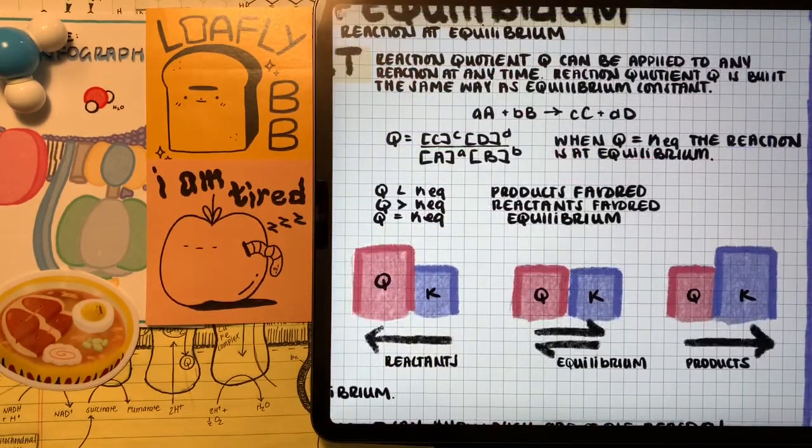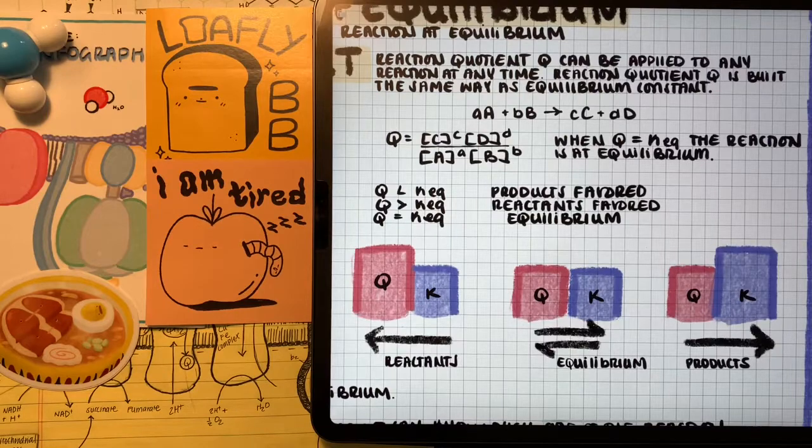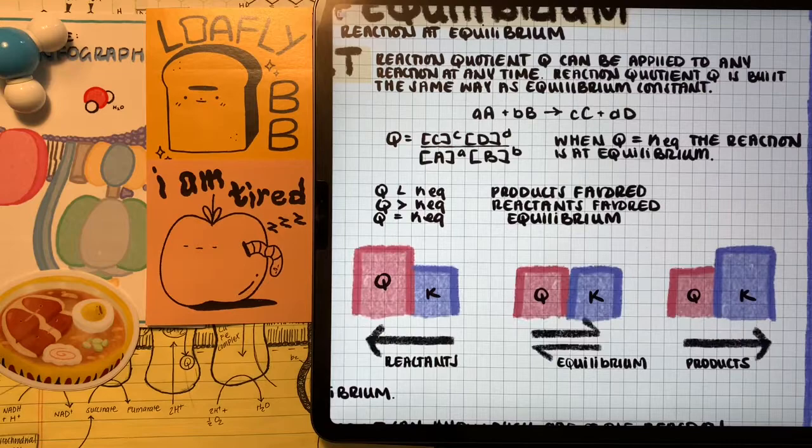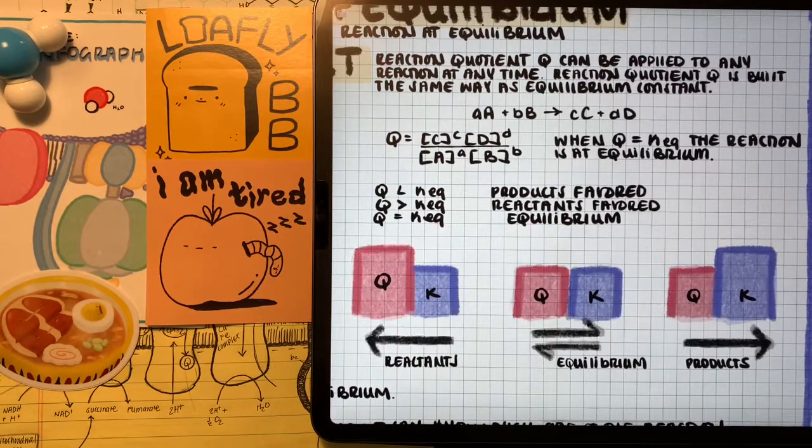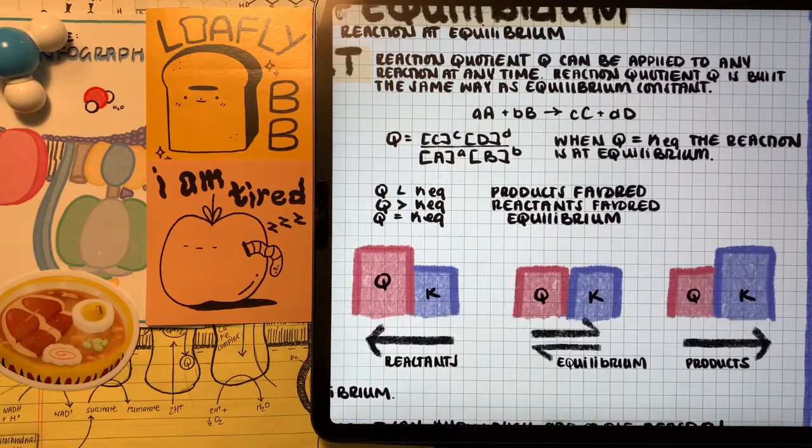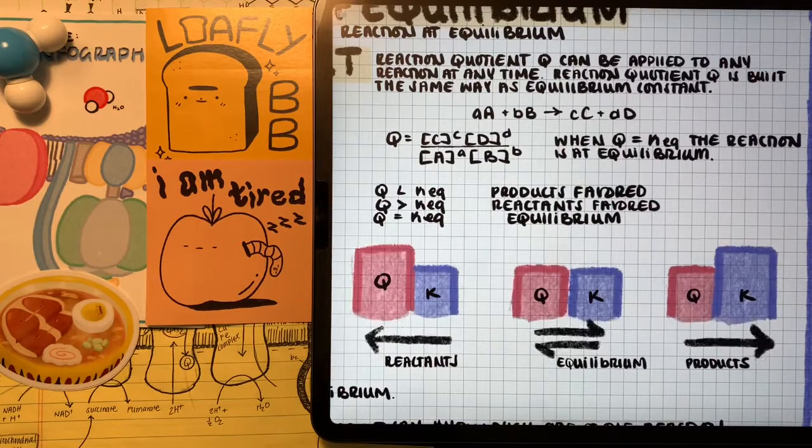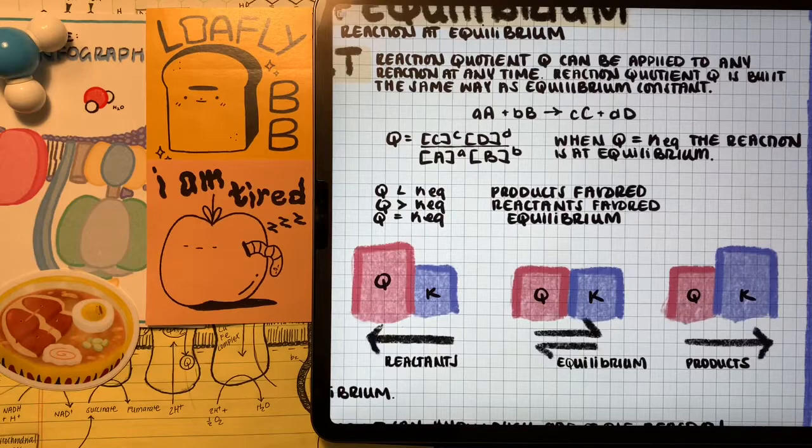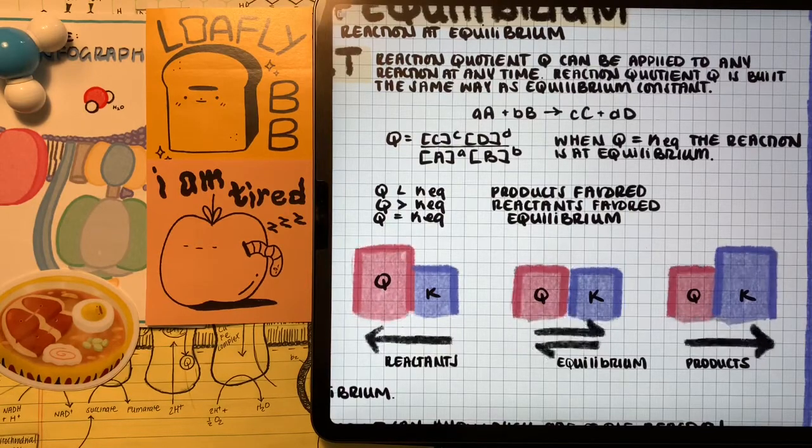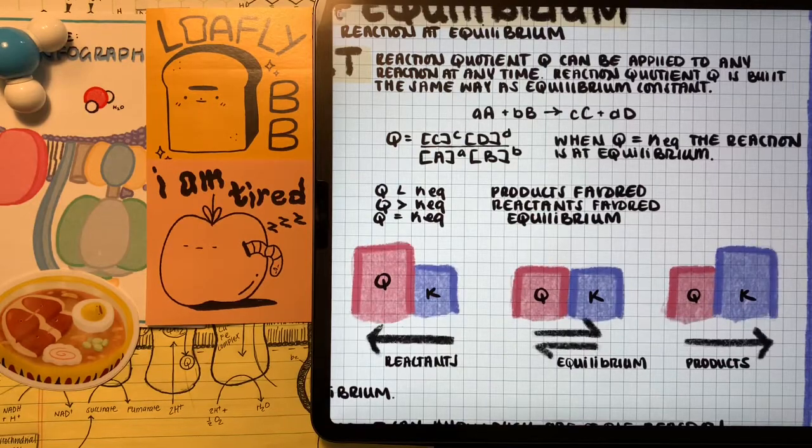Introducing ourselves to the reaction quotient opens the door to talking about favorability when talking about these types of reactions. Because when Q equals KEQ, the reaction is at equilibrium. That's a good tell to tell us that the reaction we're measuring right now is at equilibrium. But if Q is greater than the known KEQ, then the reverse reaction is favored, products turning into reactants. And if the known KEQ is greater than Q at that given time, then the products are favored, the forward reaction is favored.